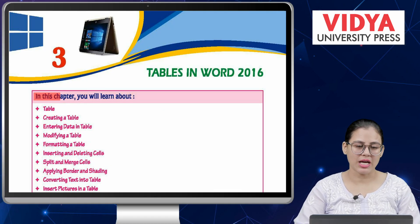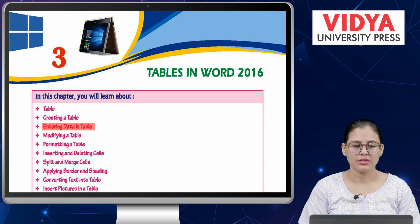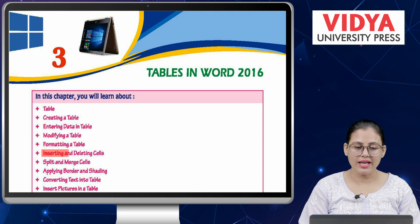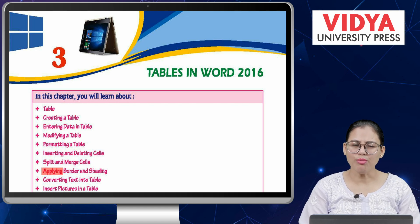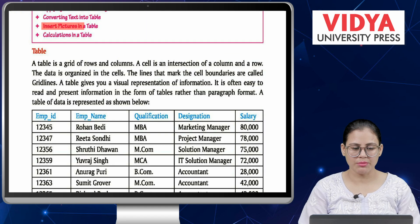In this chapter you will learn about: table, creating a table, entering data in table, modifying a table, formatting a table, inserting and deleting cells, split and merge cells, applying border and shading, converting text into table, insert pictures in a table, and calculations in a table.